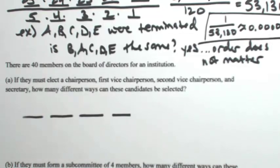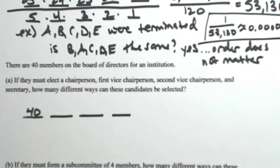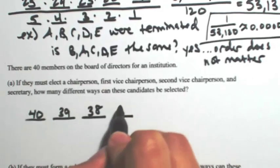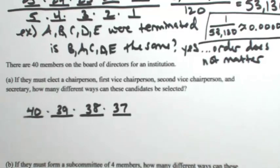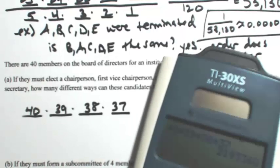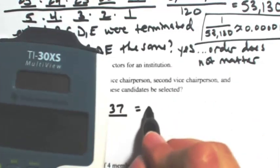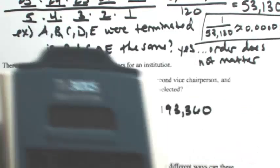So again, the first thing you want to do is mark out how many things you have. So we have four different positions. For the first position, there's 40 members, so there's 40 people up for that. One person is not going to have the same positions. Now there's 39, then 38, then 37. So by the fundamental theorem of counting, we multiply the sequence together.